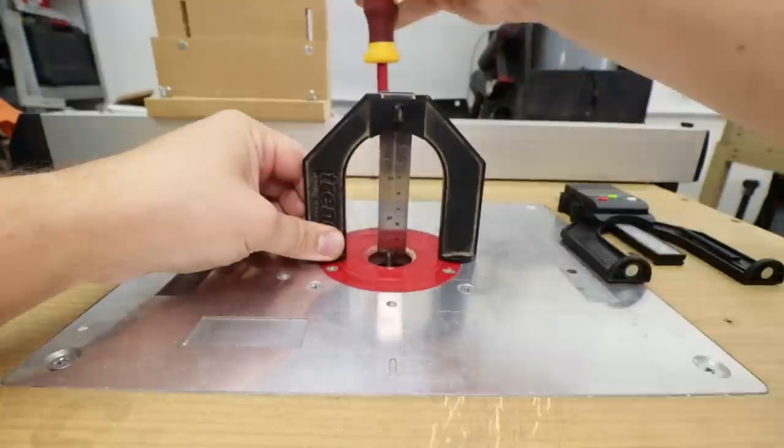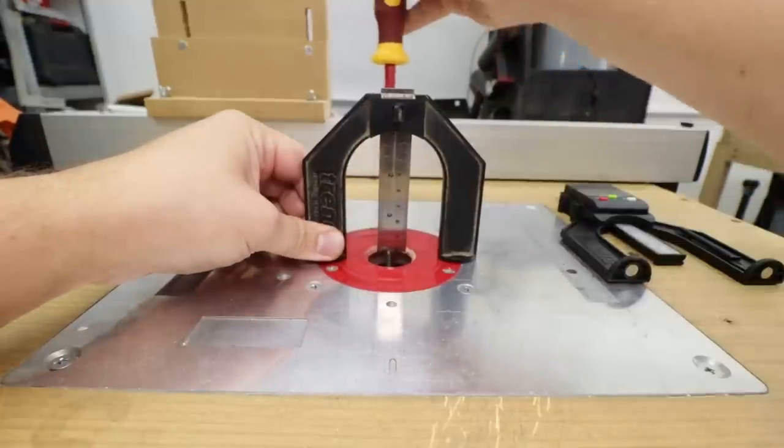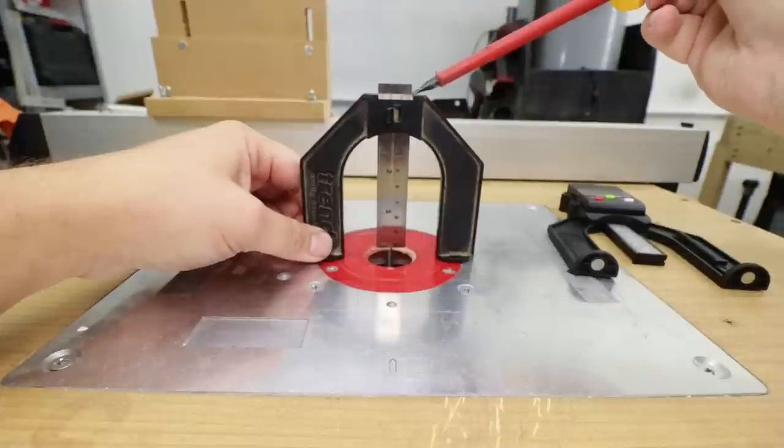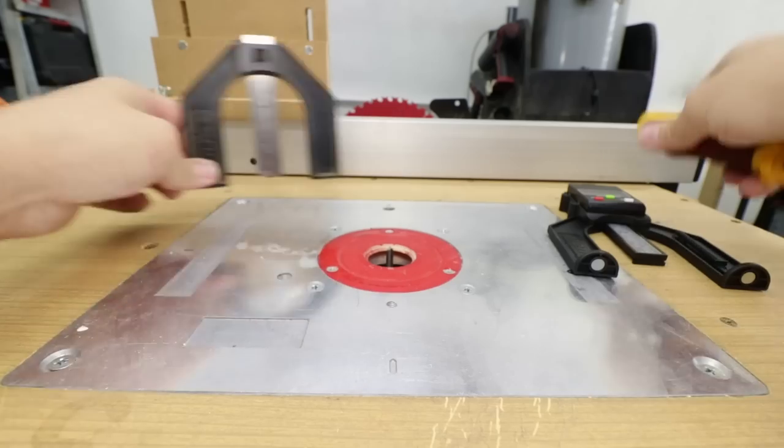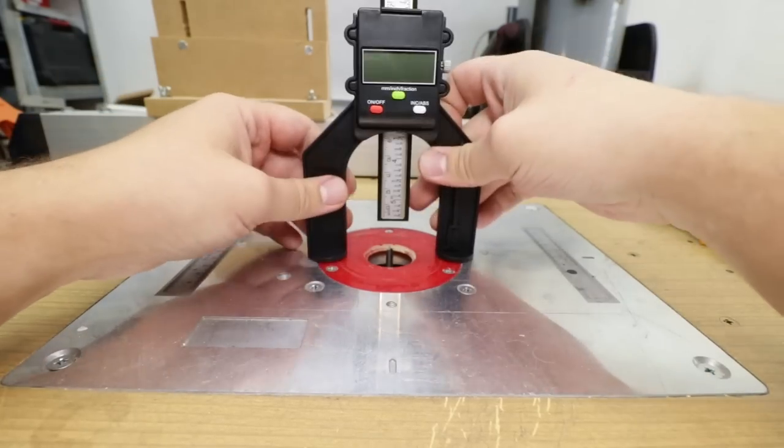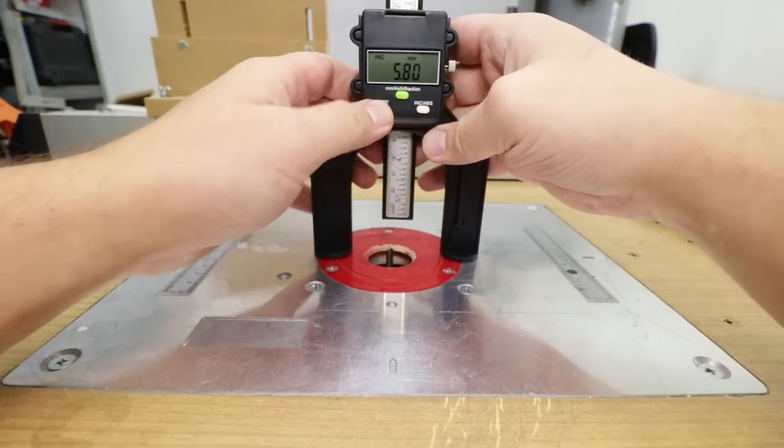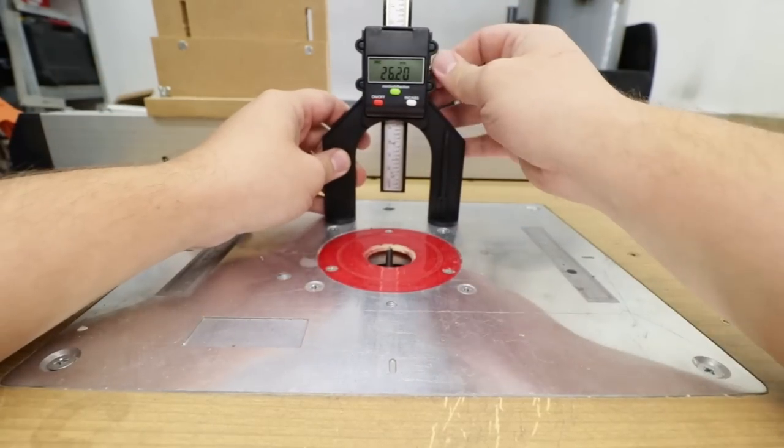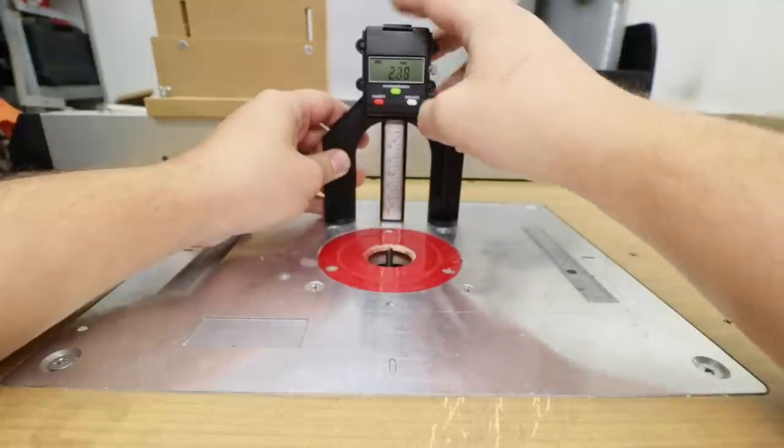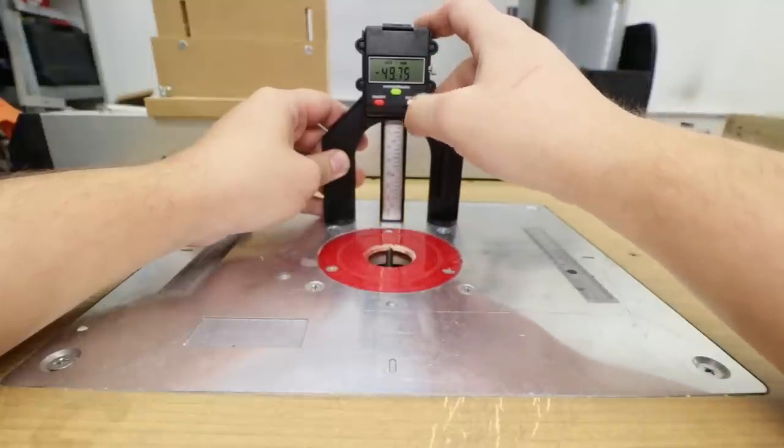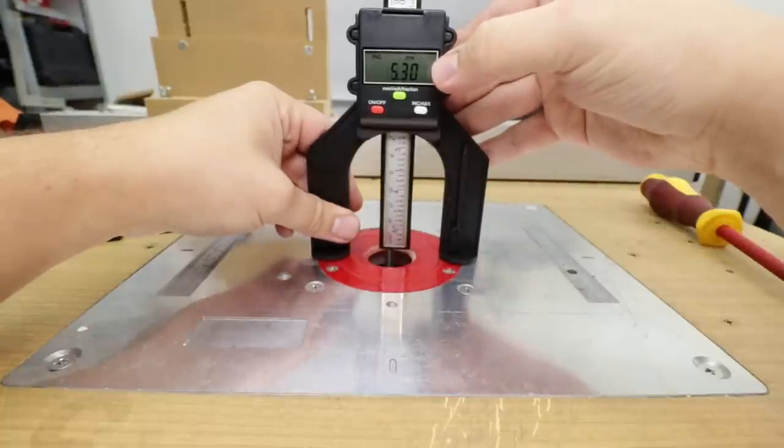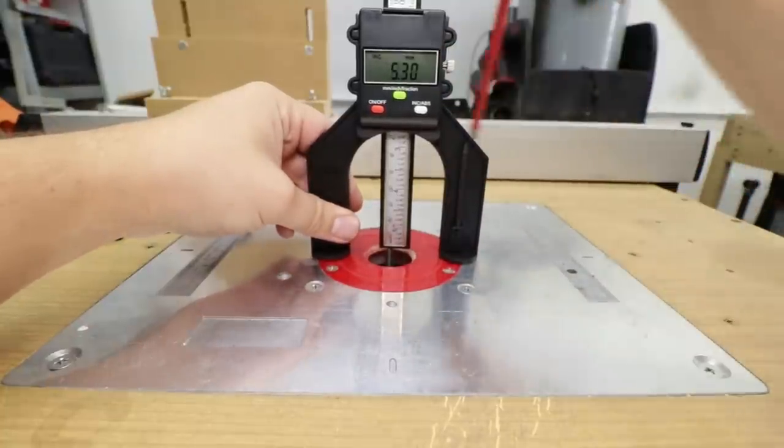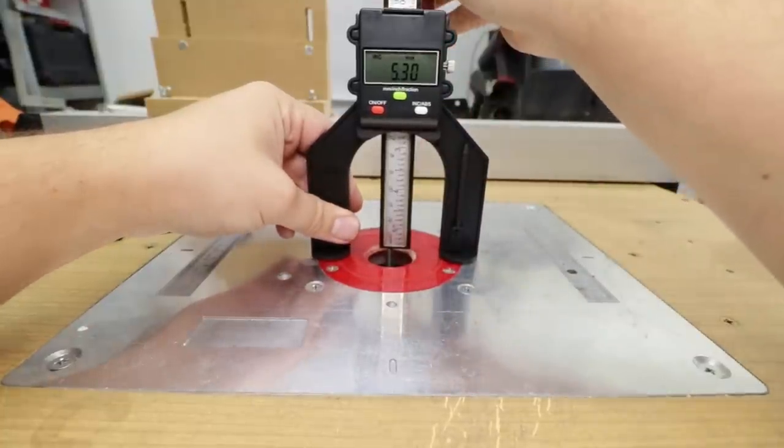Now this tool gets super handy when you're trying to set up the depth or height of your router bit for example, and that indicates straight away with high precision at what height my router bit currently is. Obviously if you've got a digital one it's even easier because you can see exactly at what height it is and you can really adjust it to your needs.